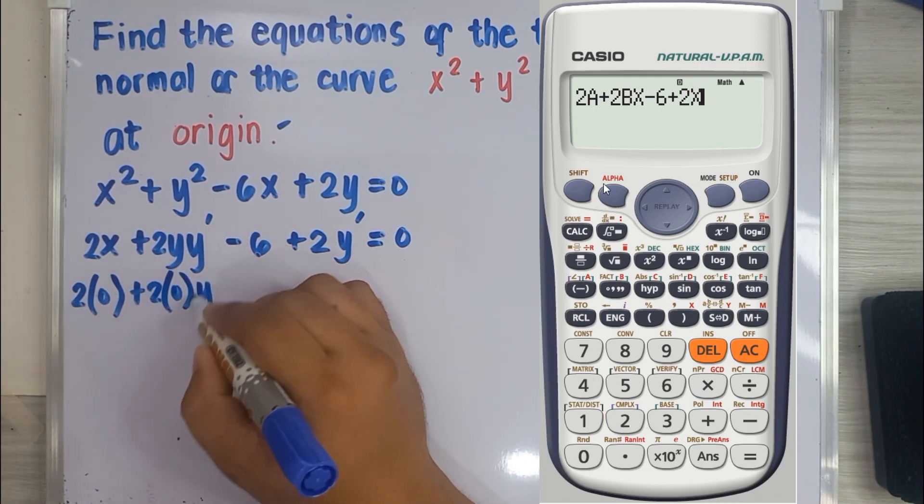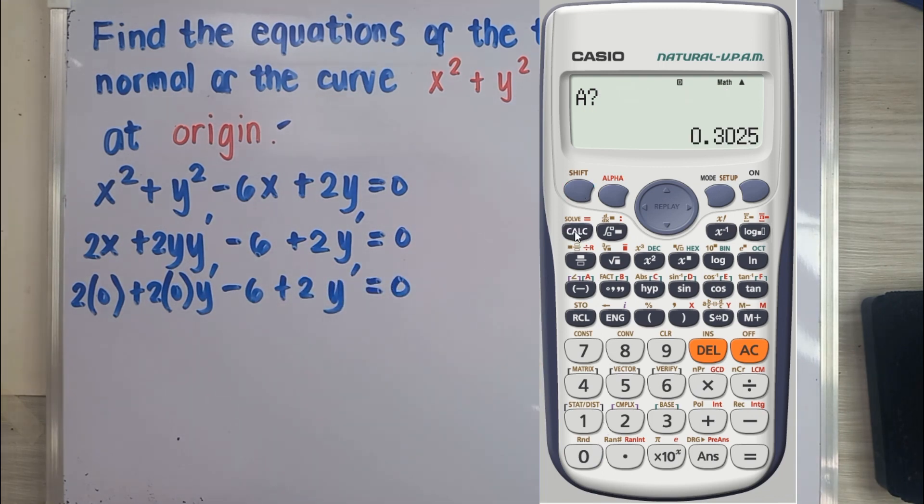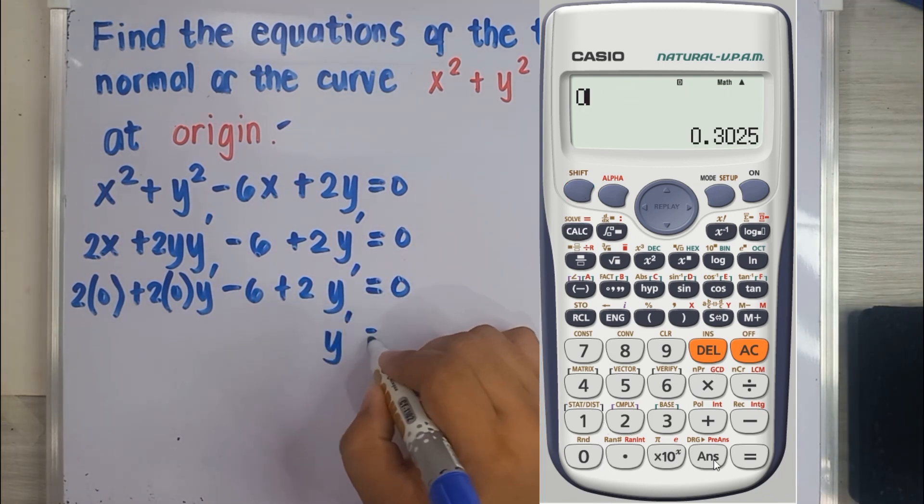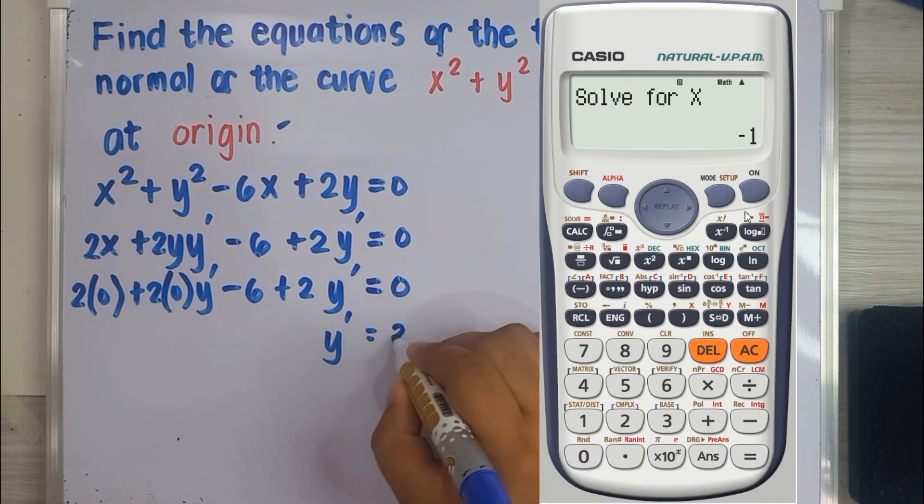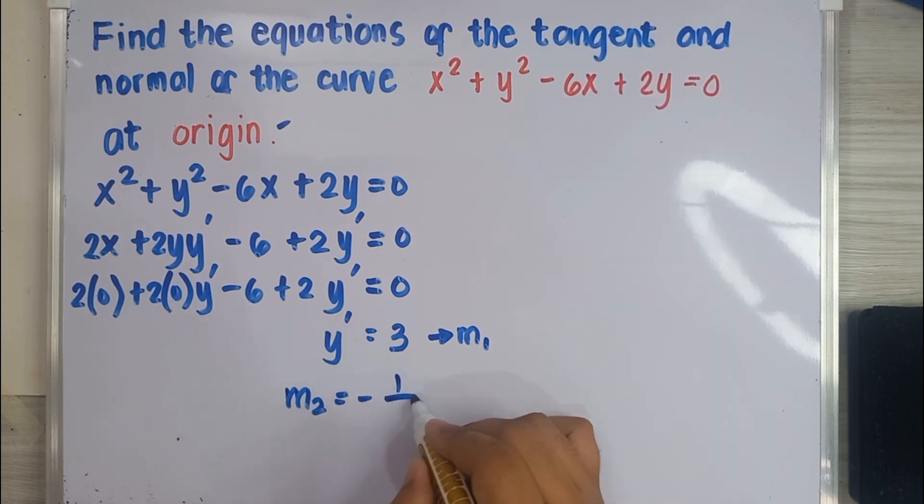Then press shift, solve button. Input value for a, which is 0, and b which is also 0 because the point is at origin. It will appear in your calculator if the variable you want to solve is x. Since y' is assigned with x, press equals and you will get your slope. Now then, the slope for the normal is negative one-third.